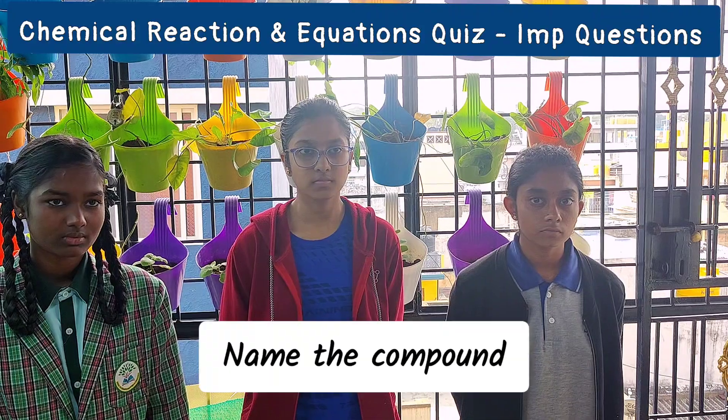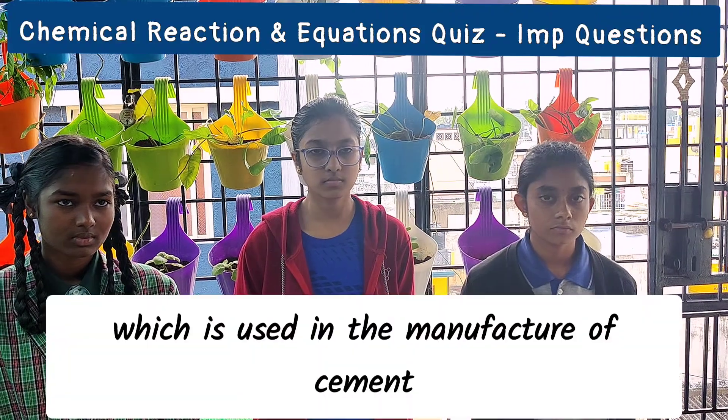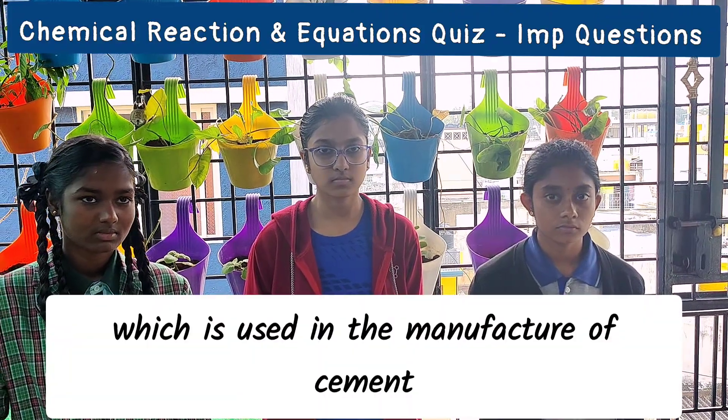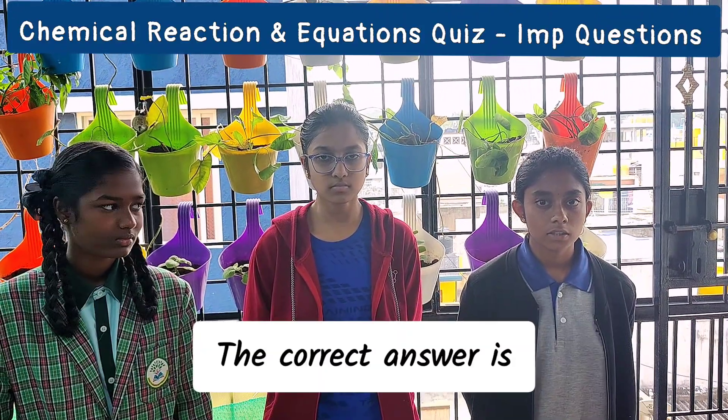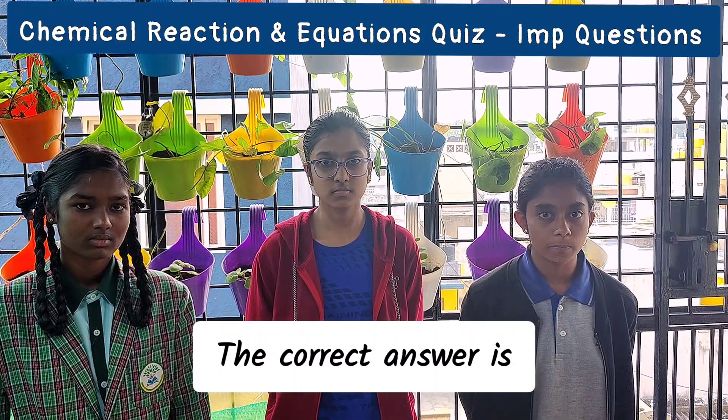Question 7: name the compound which is used in the manufacture of cement. The correct answer is quick lime or calcium oxide.